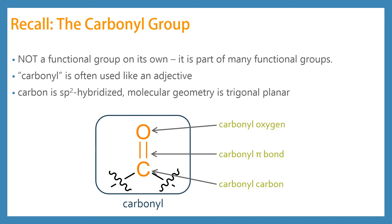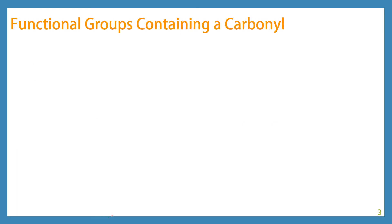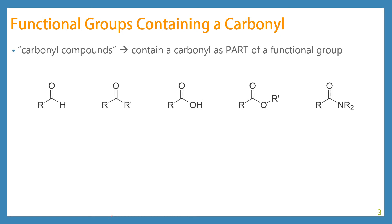The only way I don't want you to use the word carbonyl is if I ask you what is this functional group — the answer is not going to be carbonyl. There are some functional groups that we already know that contain a carbonyl. These include the aldehyde. The defining feature of the aldehyde is that the carbonyl carbon has to have at least one hydrogen attached to it. If there are two hydrogens attached to it, it's a specific aldehyde called formaldehyde.